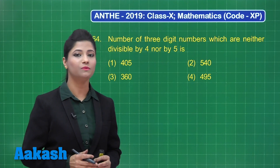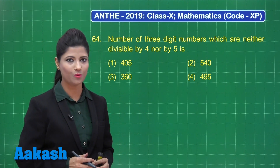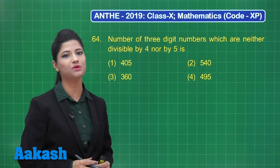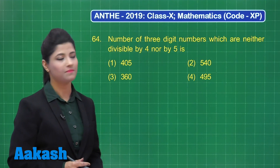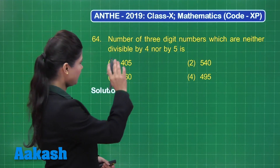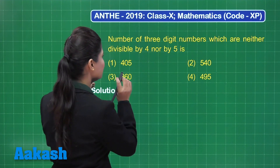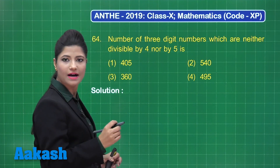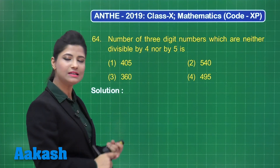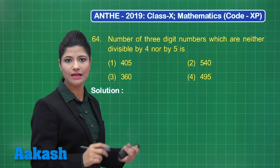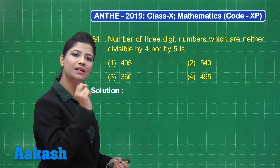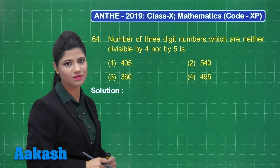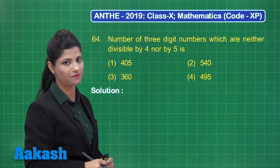For obtaining that, we will first try to obtain those numbers which are either divisible by 4 or by 5. So if we talk about numbers which are either divisible by 4 or by 5, firstly I will be calculating the 3-digit numbers which are divisible by 4.